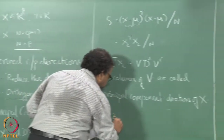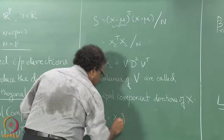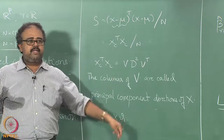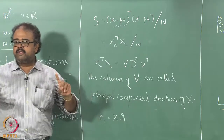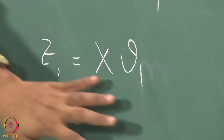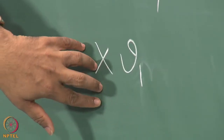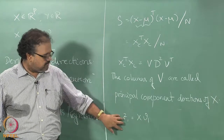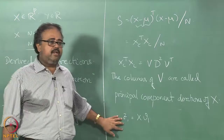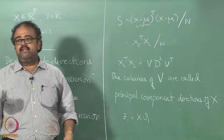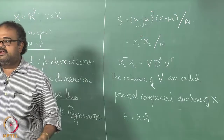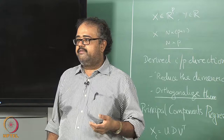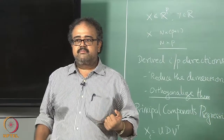Suppose I take V1, the eigenvector corresponding to the first eigenvalue. What this means is I am projecting my data X onto the first eigenvector direction. The resulting vector Z1 will have the highest variance among all possible directions in which I can project X.